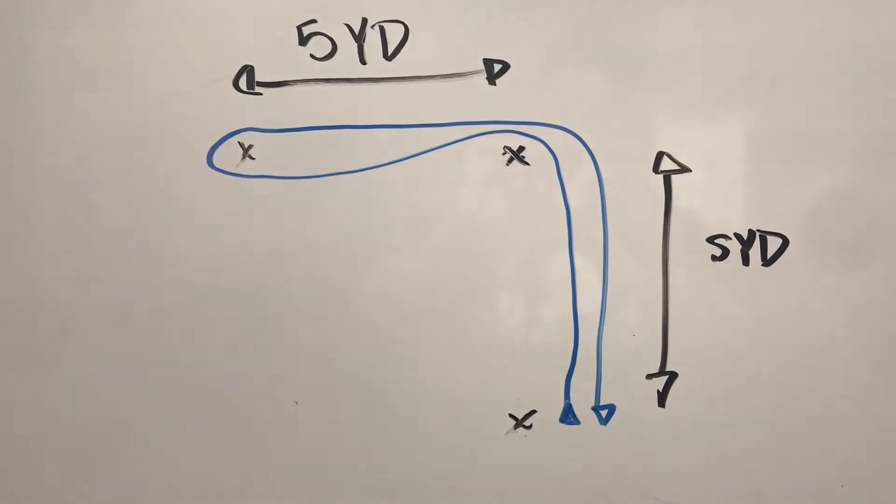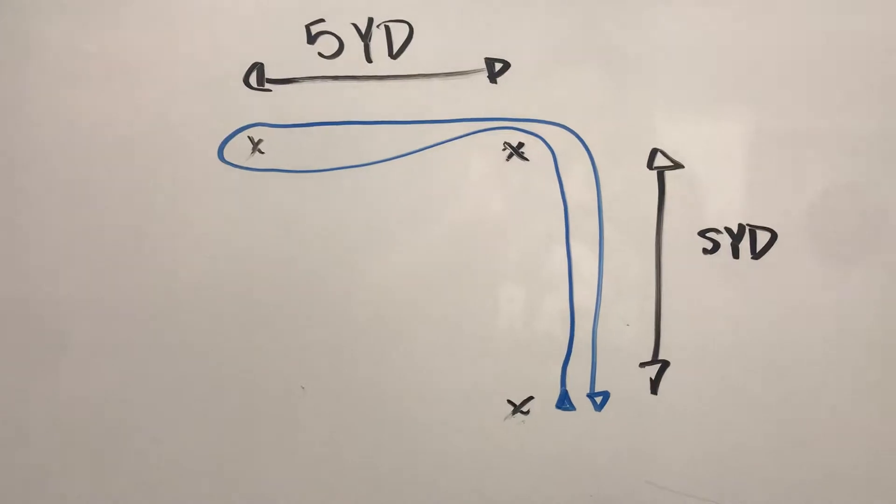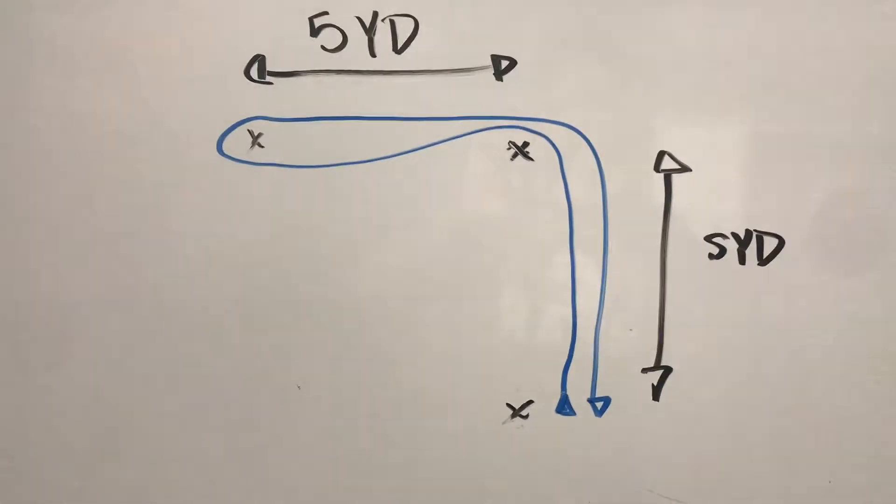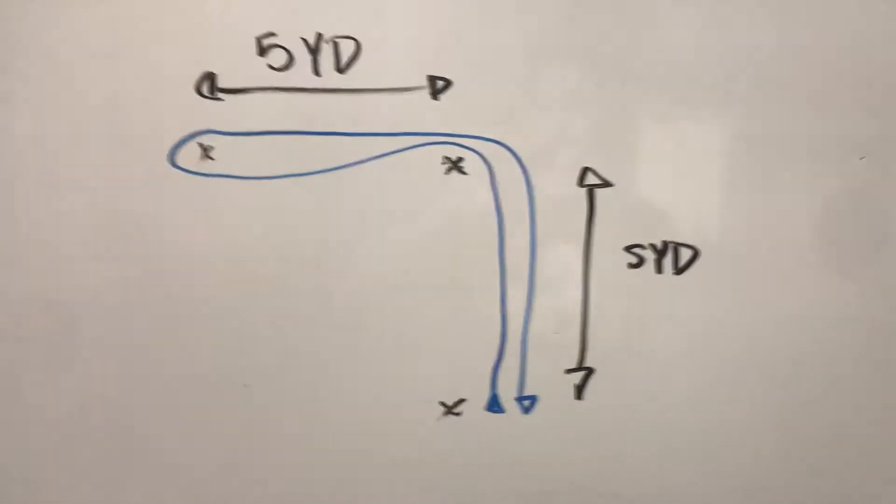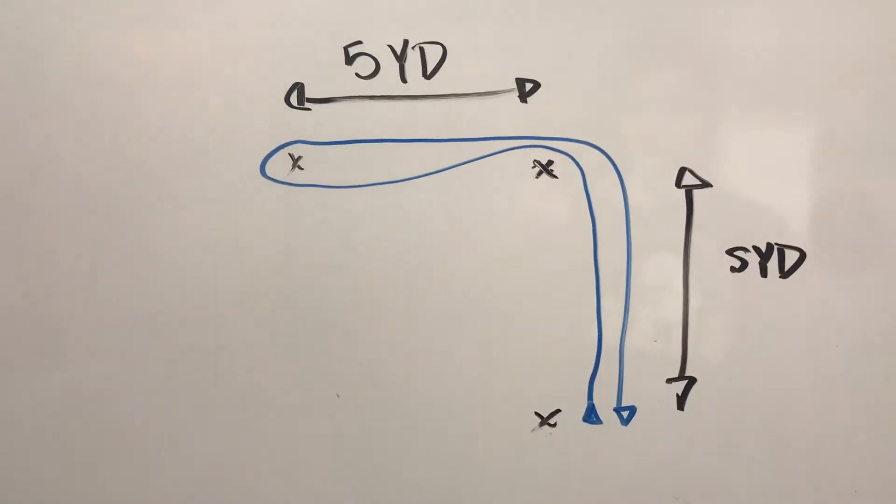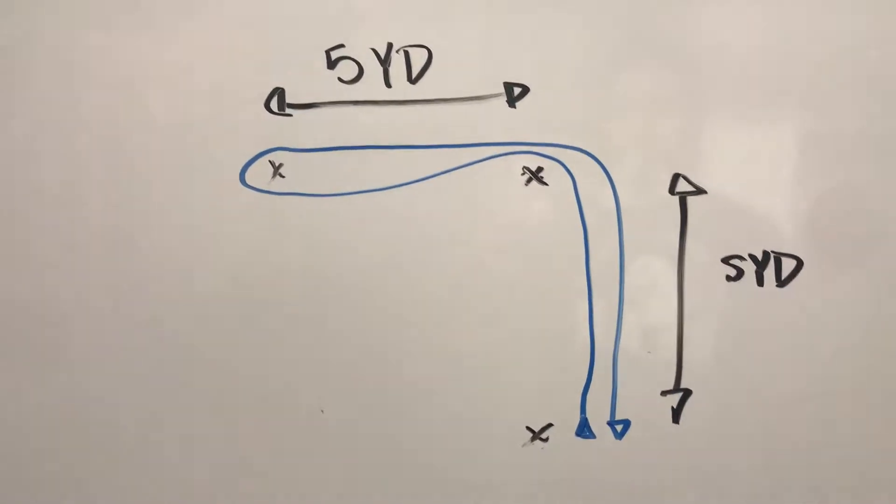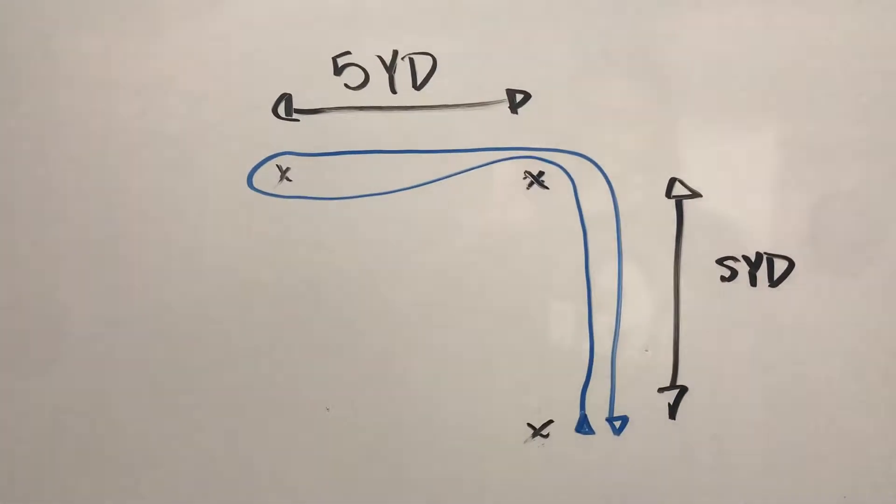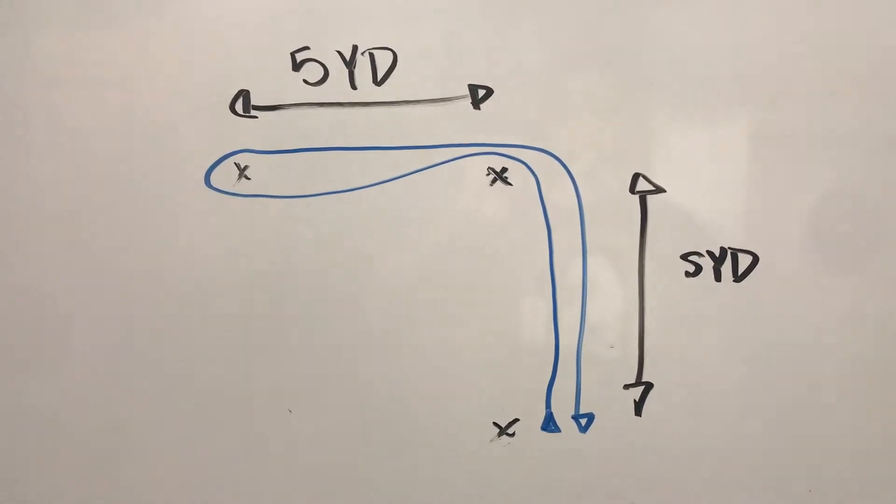Hey guys, we're gonna go over the three cone drill. This is one of the most popular drills done for sports training. Specifically, it's seen in the football combines every year. The highest level of collegiate athletes and position players go through this drill.